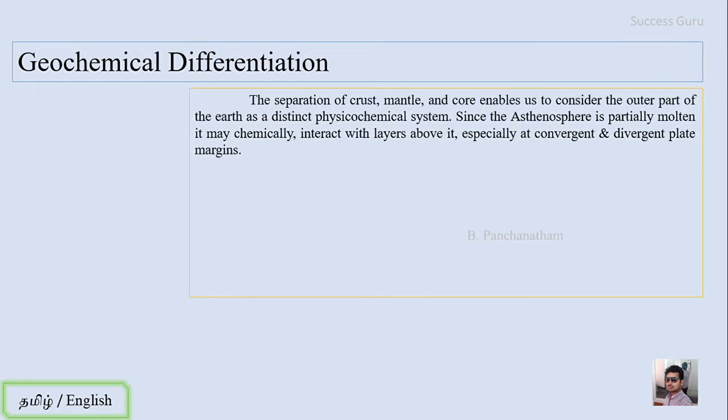The separation of crust, mantle and core enable us to consider the outer part of the earth as a distinct physicochemical system. Since the asthenosphere is partly molten, it may chemically interact with the layer above it, especially at convergent as well as at divergent boundaries.